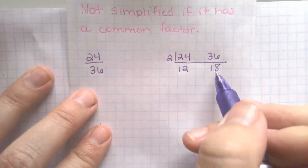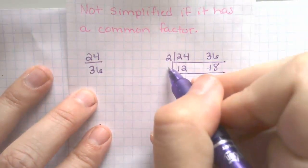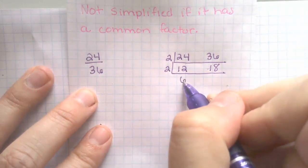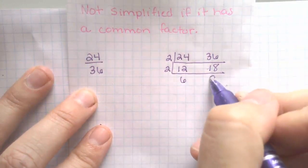So I'm going to look at this again. Oh, they're still even numbers. Let's take out another 2. 12 divided by 2 is 6. 18 divided by 2 is 9.